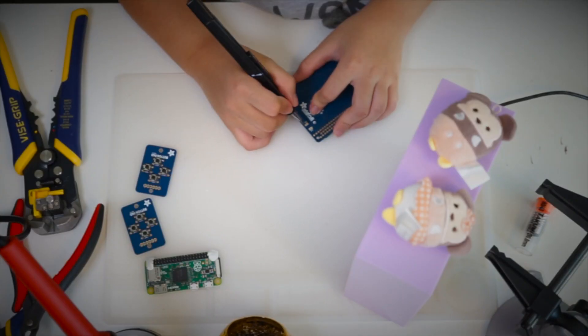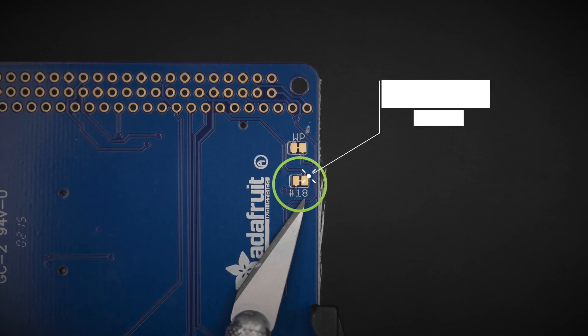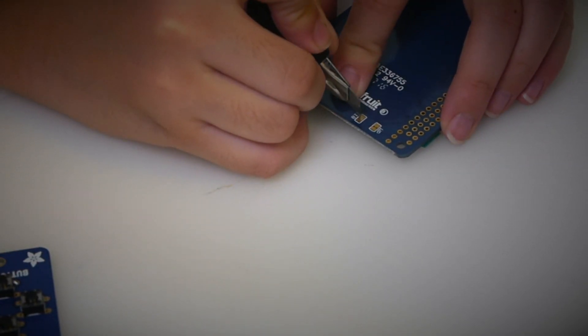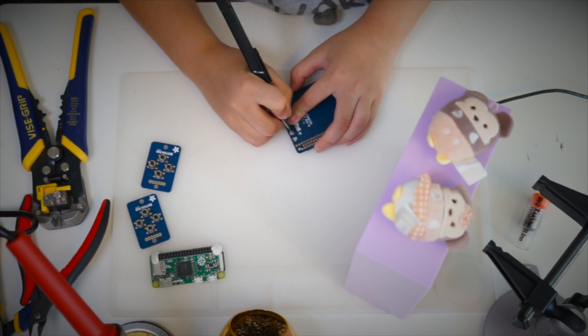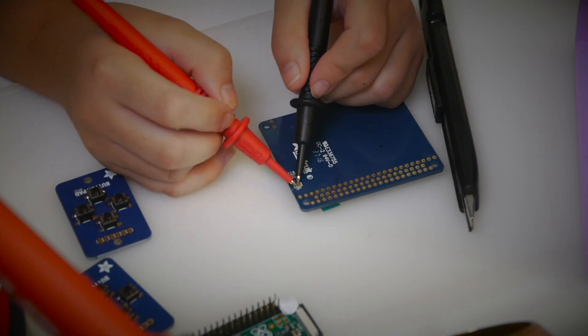Aside from soldering the Pi TFT, a certain trace needs to be cut, so that pin number 18 can be used for the buttons. I needed to find the trace on the back of the TFT and cut it with a knife. Afterwards, I tested it for continuity.